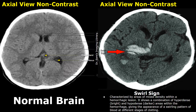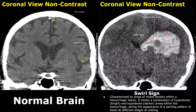This is another image showing the swirl sign — we can see low density and heterogeneous areas within the hyperdense hemorrhage. These are coronal images of the brain. In this image of intracerebral hemorrhage, the swirl sign is present; a low density area is surrounded by some heterogeneous areas, indicating active and ongoing bleeding.